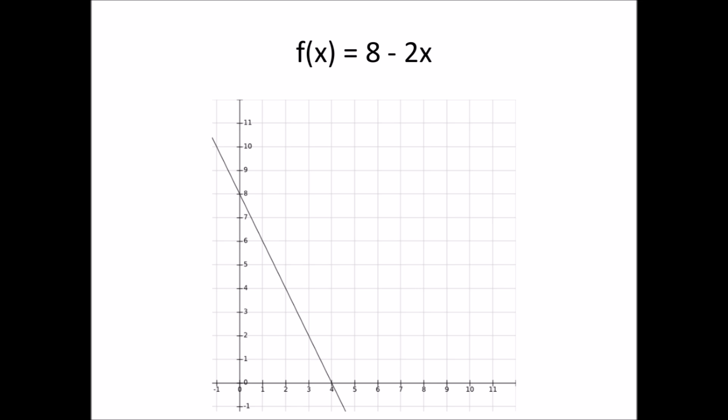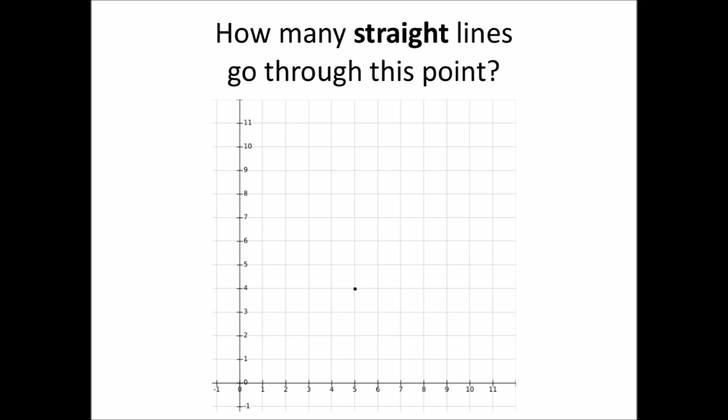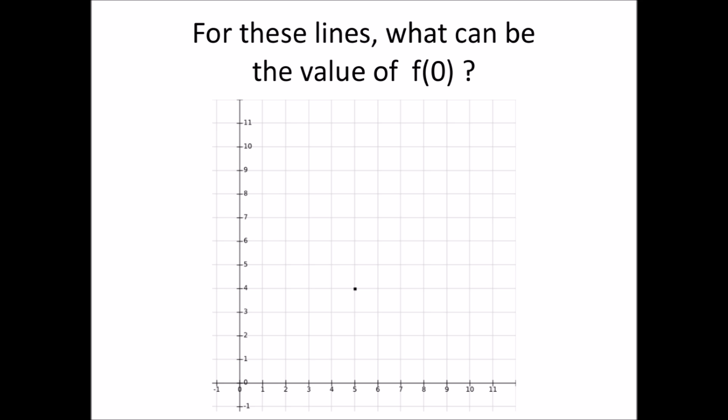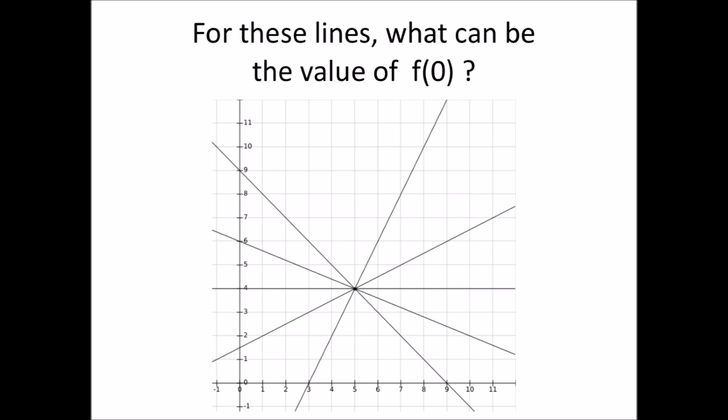Although these straight lines may seem straightforward, they have one property which we find interesting for our secret sharing scheme. Let's take an arbitrary point here, (5, 4). The question: how many straight lines go through this point? The answer is of course that there is an infinite number of lines. For these lines, what can be the value at 0, for f of 0? Again, the answer is that this can be any value depending on what line we drew through that point.